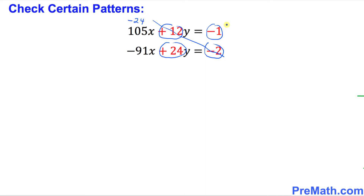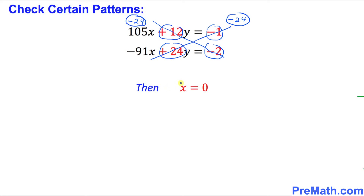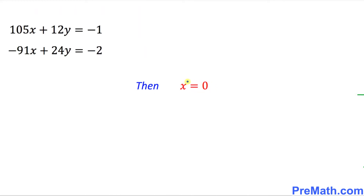Negative 2 times positive 12 is going to give us negative 24. And if we multiply the other way around, positive 24 times negative 1 is going to give us negative 24 as well. As long as these two numbers are the same, then we are always going to have x equal to 0. So once we get x equal to 0, we can plug it into any of these equations to get the y value.